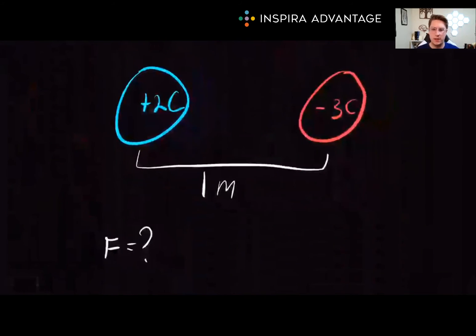Now let's put our knowledge to the test or the practice problem. Suppose we have two charges. Charge one is positive two coulombs and charge two is negative three coulombs. And they are separated by a distance of one meter. What is the magnitude and direction of the electrostatic force between them?